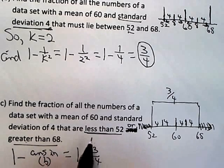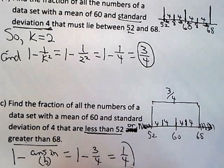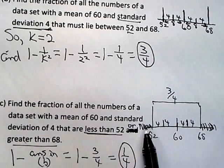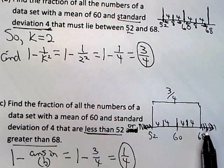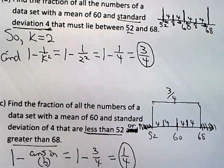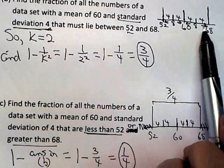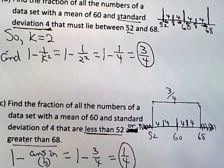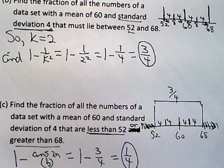That's 1 minus 3 fourths, which equals 1 fourth. So 1 fourth of the data is either less than 52 or greater than 68. Whenever they ask for a 'between' result, apply the theorem directly. When they ask for less than or greater than — the areas outside the interval — take 1 minus your 'between' answer. About a quarter of data points fall outside, and three quarters fall inside that interval.